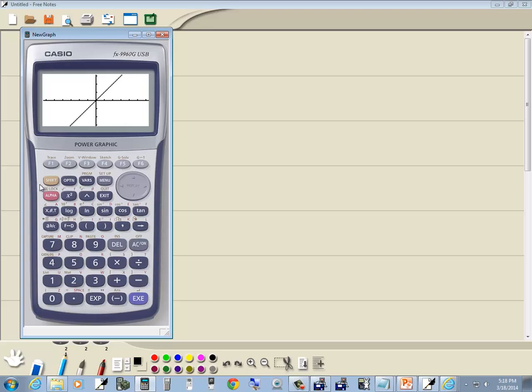If yours doesn't look like this, then we want to go to the zoom menu. So I do shift, and then when I do the shift, see this bottom menu appears? And zoom is F2. So I press F2. Now we've got box, fact, in, out, auto, and then this little triangle here indicates there's more over there. So if I press F6, that'll bring up more choices.